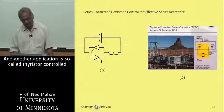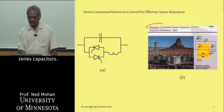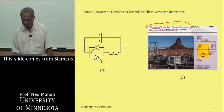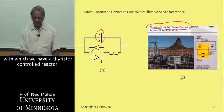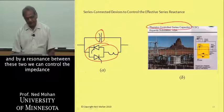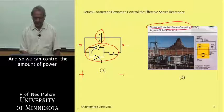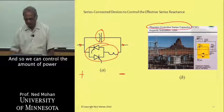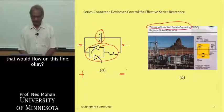Another application is thyristor-controlled series capacitors, or TCSC. This slide from Siemens shows a capacitor in parallel with a thyristor-controlled reactor. By resonance between these two, we can control the impedance between these two points, and thus control the amount of power that flows on this line.